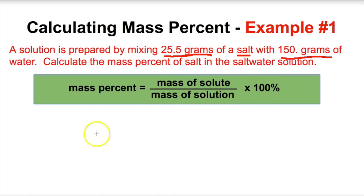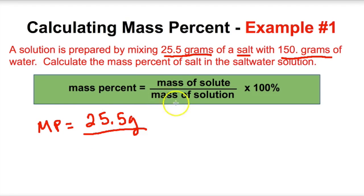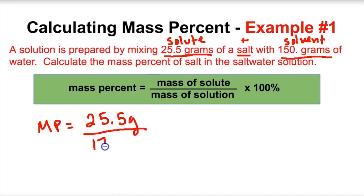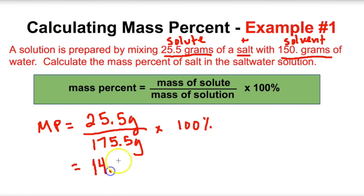We want to know the mass percent of the salt dissolved in this water. We take 25.5 grams divided by 175.5 grams, times 100%. Using the correct number of significant figures, that gives us 14.5%. So we have a 14.5% sodium chloride solution by mass.